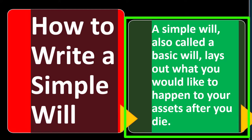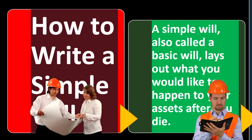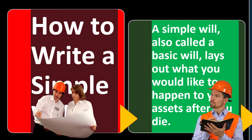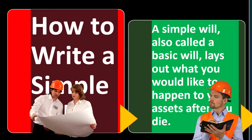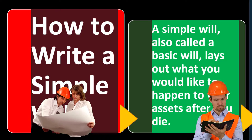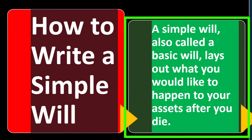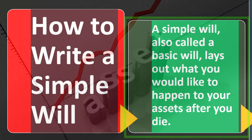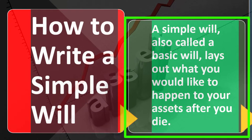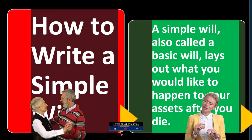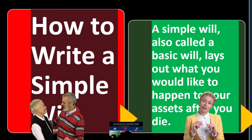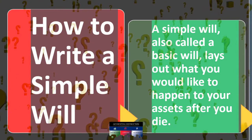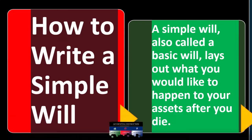A simple will, also called a basic will, lays out what you would like to happen to your assets after you die. Looking at the estate planning timeline from a prior presentation, we are in the before-death phase — planning what we want done with our assets. At the point of death we won't be able to manage them, so we want those assets allocated in accordance with our wishes. Without any organization, it could cause chaos for loved ones trying to determine what assets exist and how to allocate them.